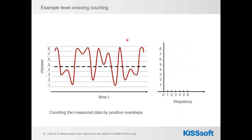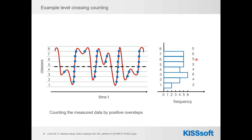The second example is level crossing counting, using the same values. Here I count only when the signal crosses from one class to another in a positive direction. Counting from class seven to eight gives five events, and so on. The result — 0, 5, 5, 5, 4, 6, 4, 2 — is totally different from peak counting, because the method of counting the values is done in a different way.